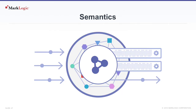Semantics is a data model that focuses on relationships, which adds contextual meaning around the data so it can be better understood, searched, and shared. This is done through the use of triples, made up of a subject, a predicate, and an object. MarkLogic can act as a triple store, allowing you to leverage the power of semantic triples and SPARQL queries along with your normal documents and standard search mechanisms. These triples can be used to establish relationships between documents and act as joins.